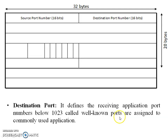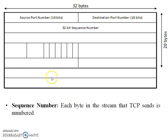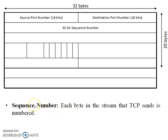Well-known ports are assigned to commonly used applications. The third field is the 32-bit sequence number. Each byte in the stream that TCP sends is numbered. For example, if I have 10 MB of data, I divide it into 1 MB blocks and assign sequence numbers from 0 to 9 — a total of 10 blocks.